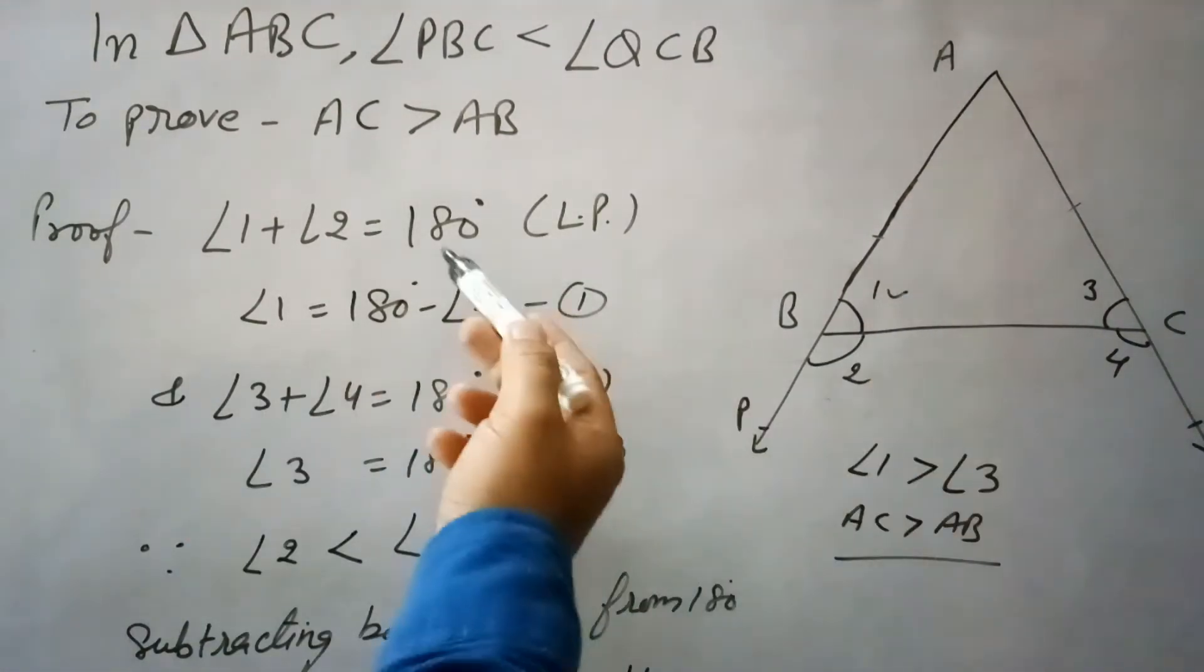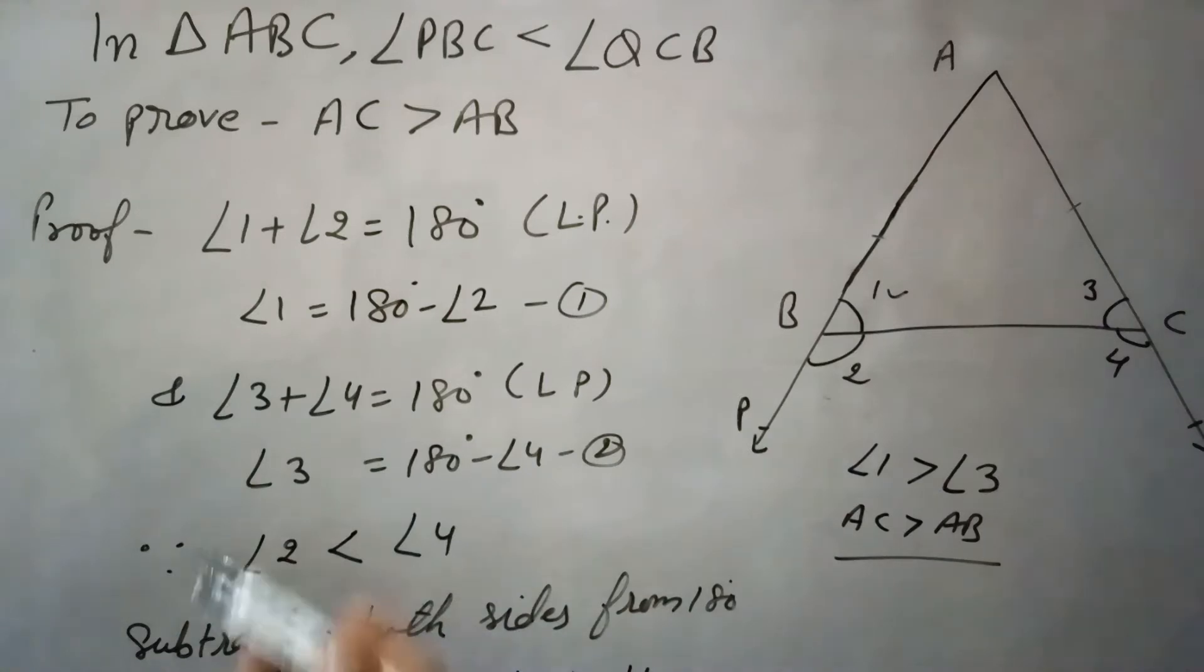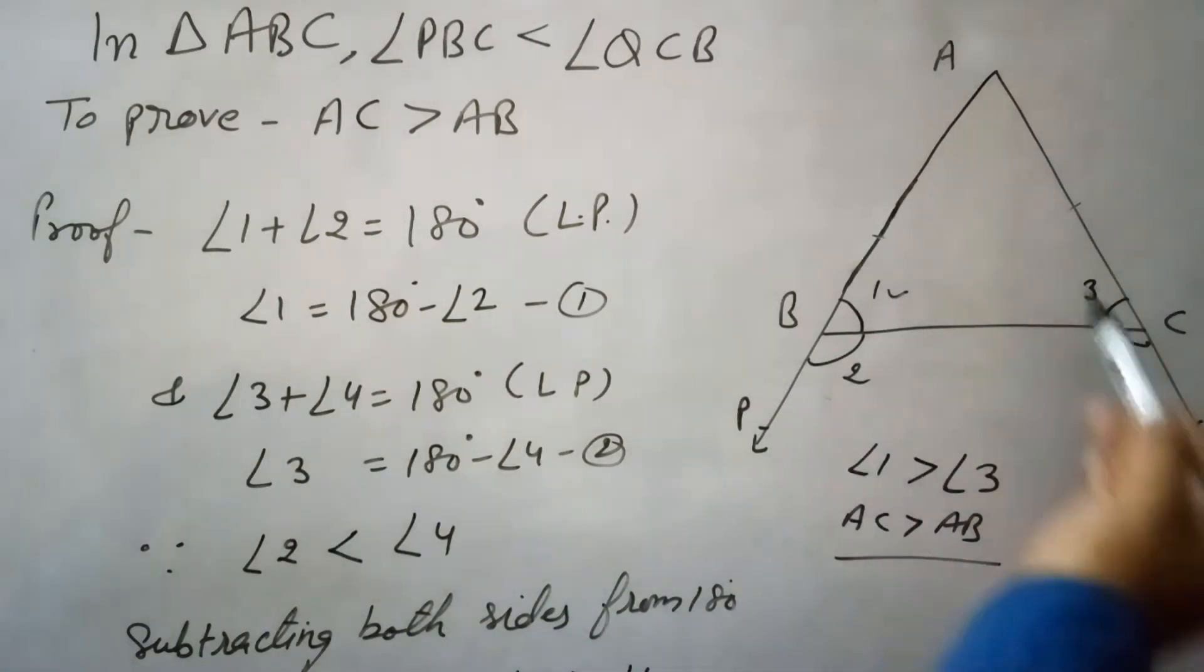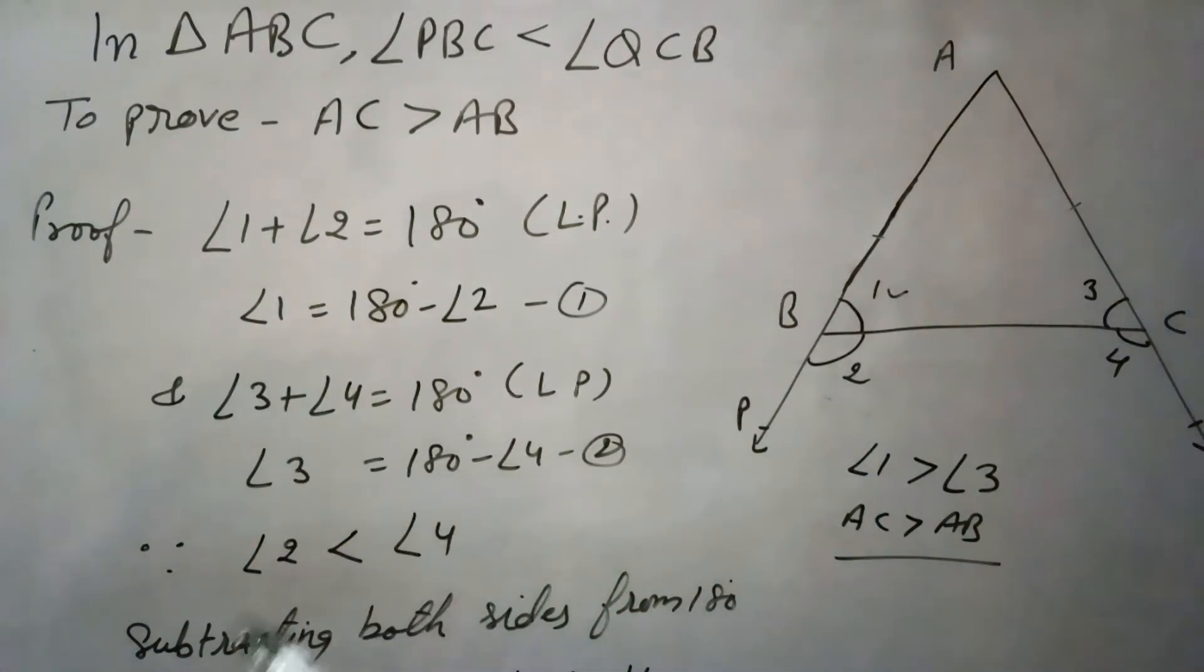Now, angle 1 plus angle 2 is 180 degrees (linear pair), so angle 1 is 180 minus angle 2. Angle 3 plus angle 4 is 180 degrees, so angle 3 is 180 minus angle 4. And it is given that angle 2 is less than angle 4.